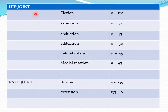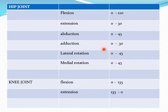For the hip joint, movements are flexion, extension, abduction, adduction, lateral rotation, and medial rotation. Flexion: 0 to 120 degrees. Extension: 0 to 30 degrees. Abduction: 0 to 45 degrees. Adduction: 0 to 30 degrees. Lateral rotation: 0 to 45 degrees. Medial rotation: 0 to 45 degrees.